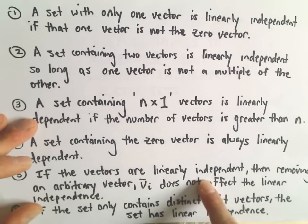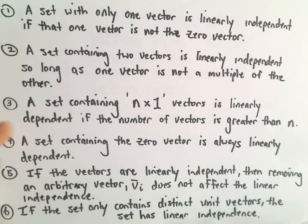Number 5 says if you have a bunch of linearly independent vectors, then you can start removing vectors from that set, and you'll still have a collection that's linearly independent. Getting rid of vectors is not going to change that.